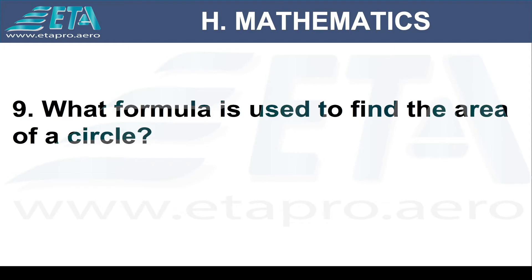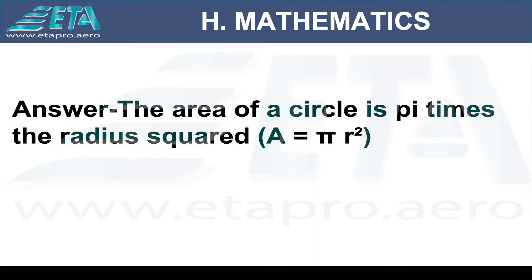What formula is used to find the area of a circle? The area of a circle is pi times radius squared.